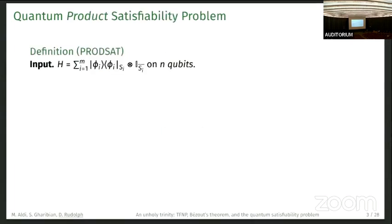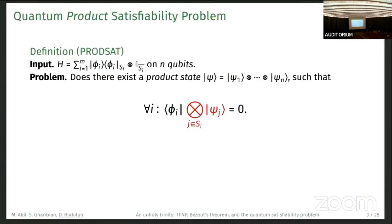Specifically, you're interested in the product satisfiability problem. The setup is the same as before, but now we ask, does there exist a product state ψ, which is a tensor product across all qubits, such that all the constraints are satisfied on their support? For constraint φ_i, we just tensor together the qubits on the support s_i of φ_i, and we demand that this is zero.